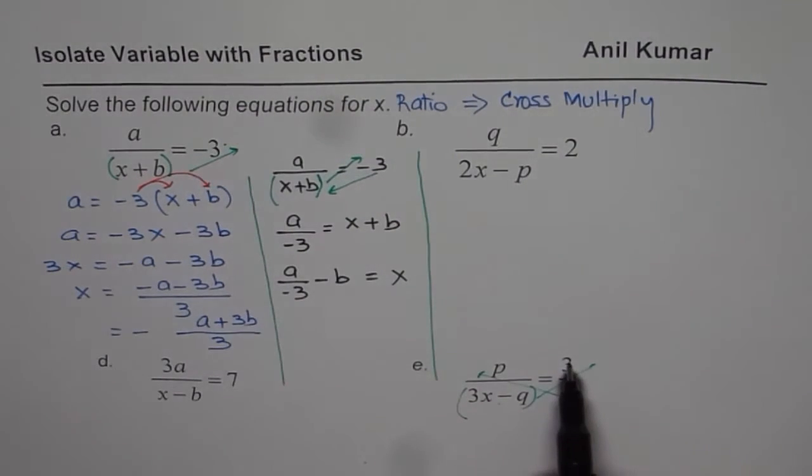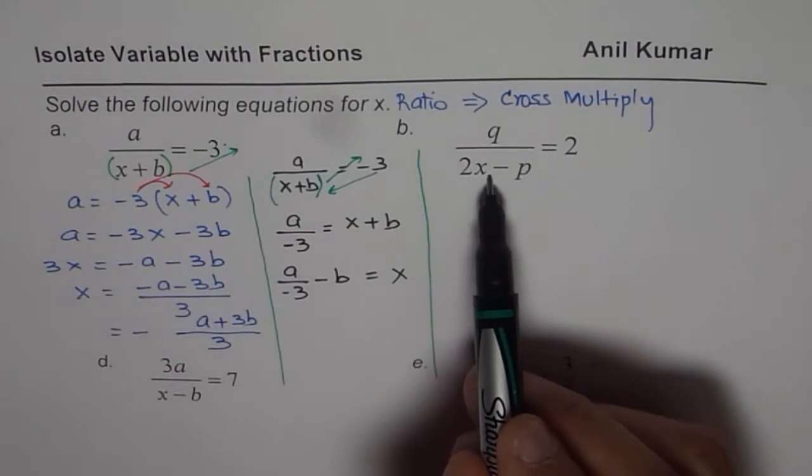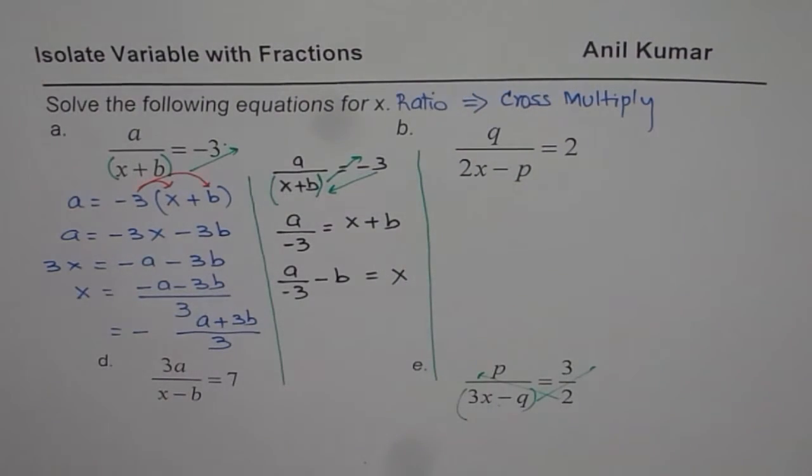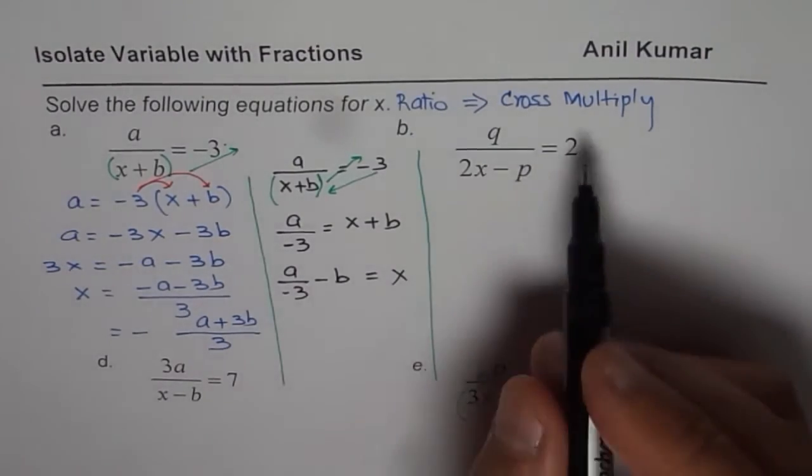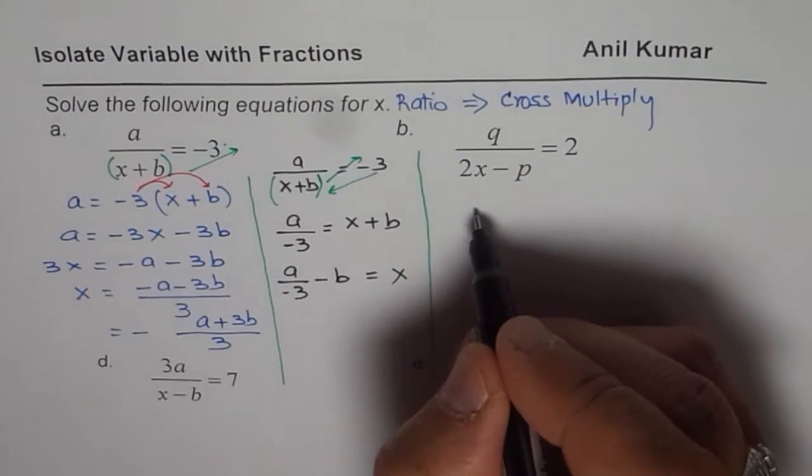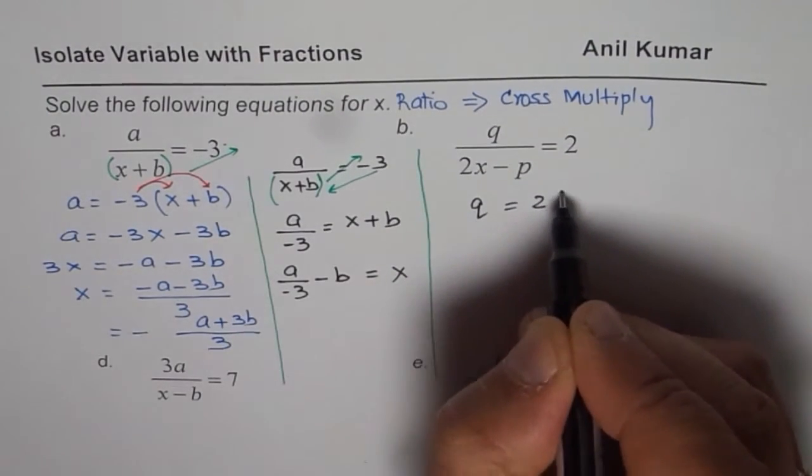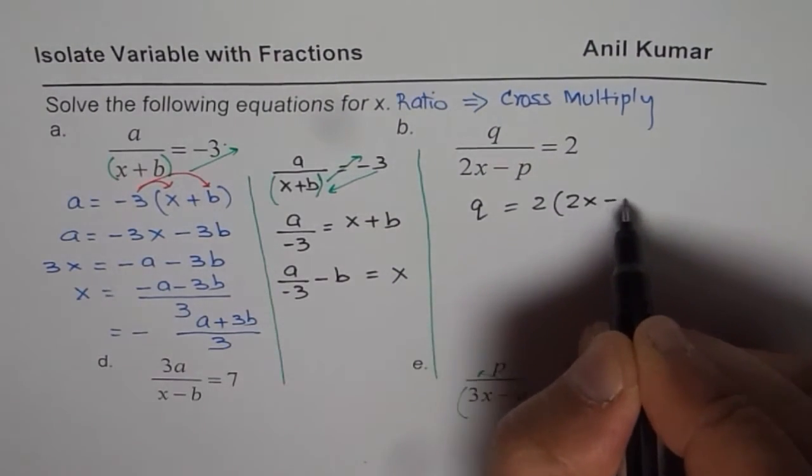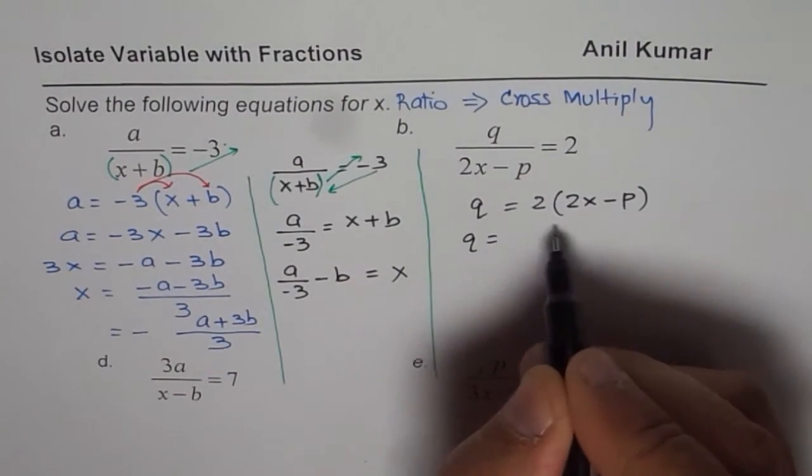This term being multiplied by 3 is similar to this term being multiplied by 2. So let us cross multiply. Either technique can be adopted. We'll cross multiply this time. So q equals 2 times 2x minus p. So that means q equals, open the bracket.